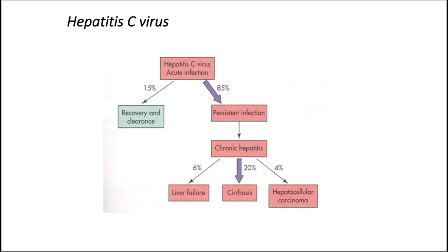In this slide, we can see the outcome of hepatitis C virus infection. The incubation period averages 6 to 12 weeks. The infection is usually asymptomatic or mild and icteric, but results in a chronic carrier state in up to 85% of patients. The average time from infection to the development of chronic hepatitis is 10 to 18 years. Cirrhosis and hepatocellular carcinoma are late sequelae of chronic hepatitis.